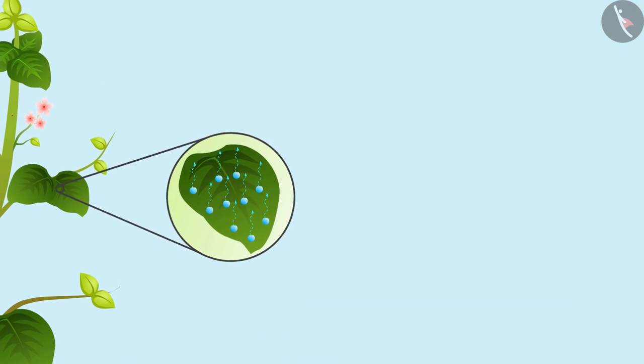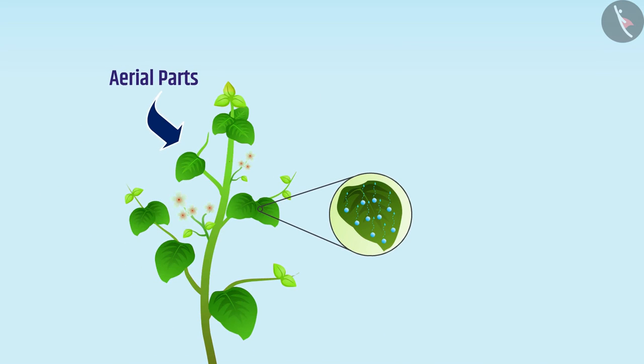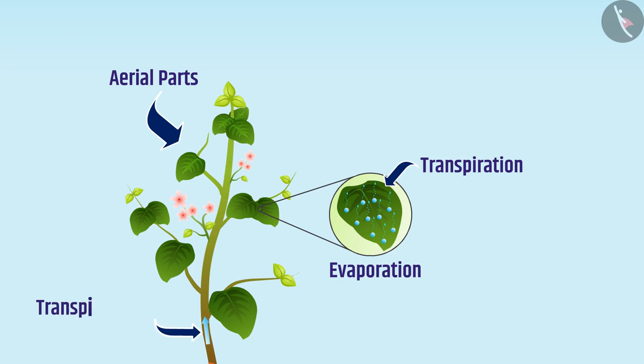There is also loss of water in the form of vapor from the aerial parts of the plant, which is called transpiration. This evaporation creates a suction called transpiration pull, due to which water gets pulled upward and can reach various parts of the plant. Transpiration also regulates plant temperature.